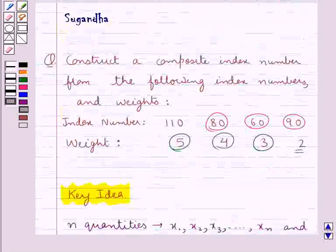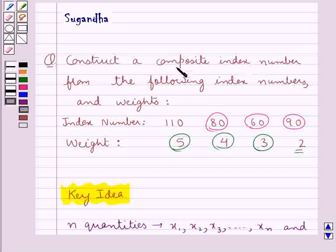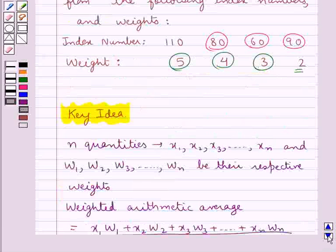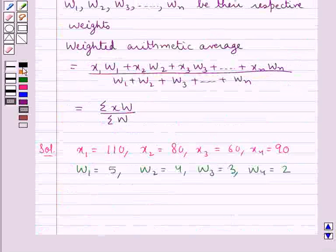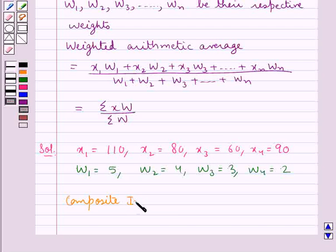Now we are supposed to construct a composite index number which would be same as the weighted arithmetic average. Now we can say that the composite index number